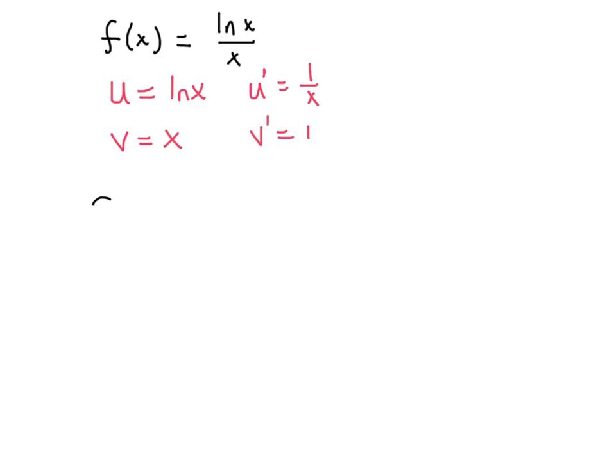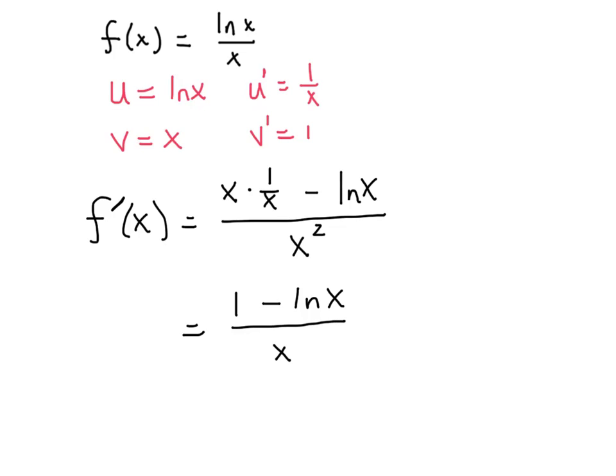To get that derivative, f prime of x, we follow the quotient rule. It's v times u prime, bottom times the derivative of the top, minus u times v prime, which is the top times the derivative of the bottom, that's the log of x, over the denominator squared, v squared, so that'd be x squared. We do a little simplification. On top we have 1 minus natural log of x, and the denominator is x squared. So far, not too bad.